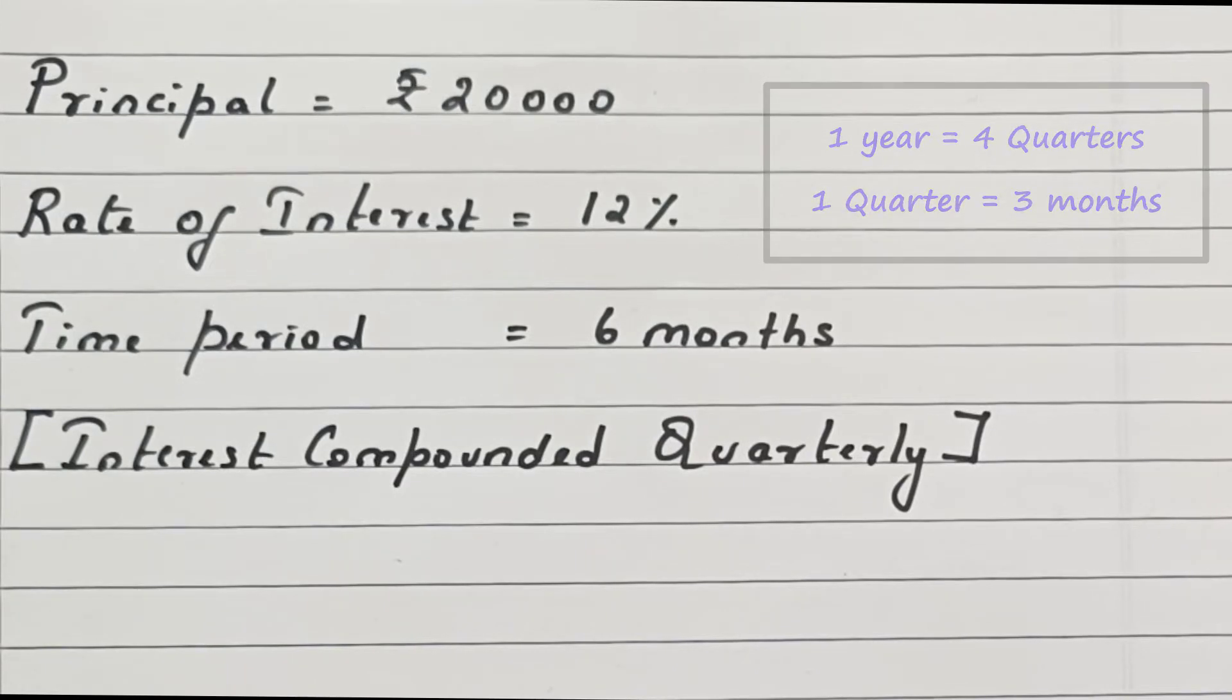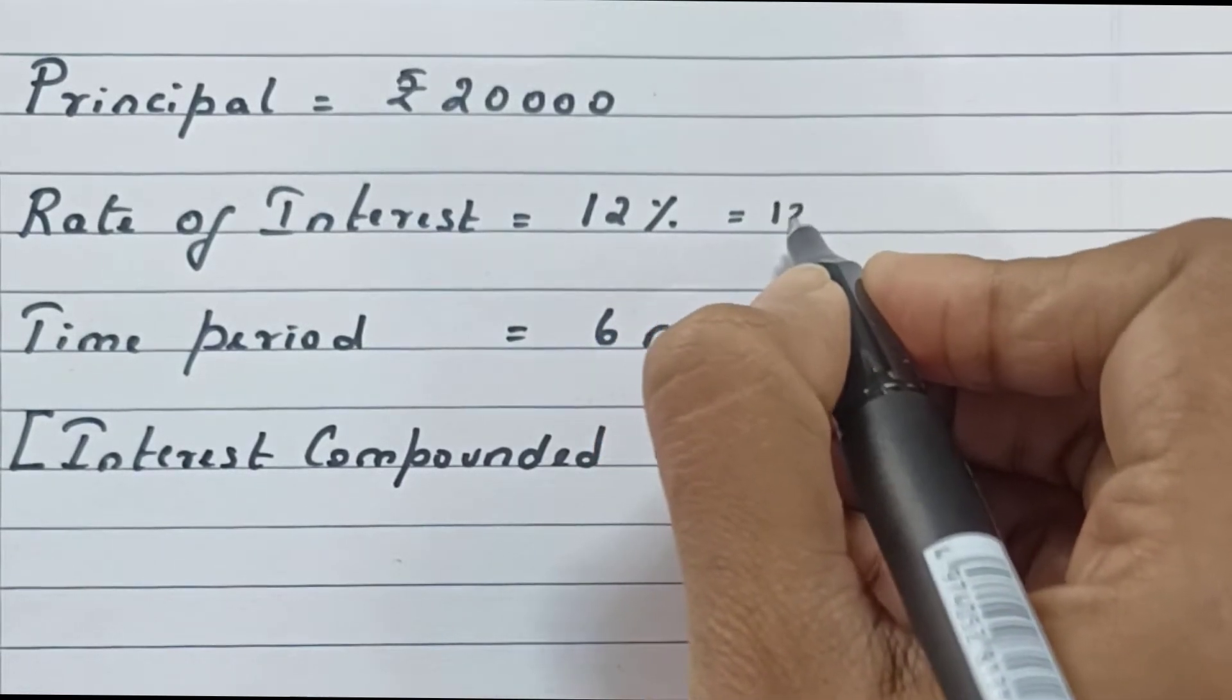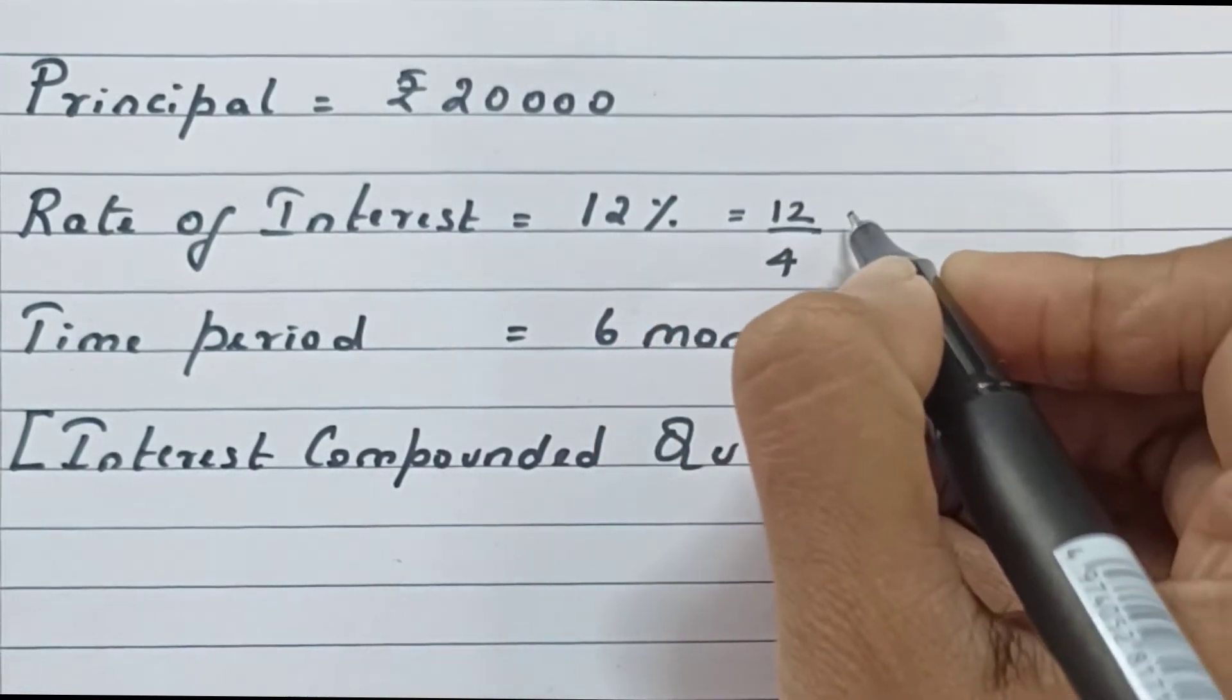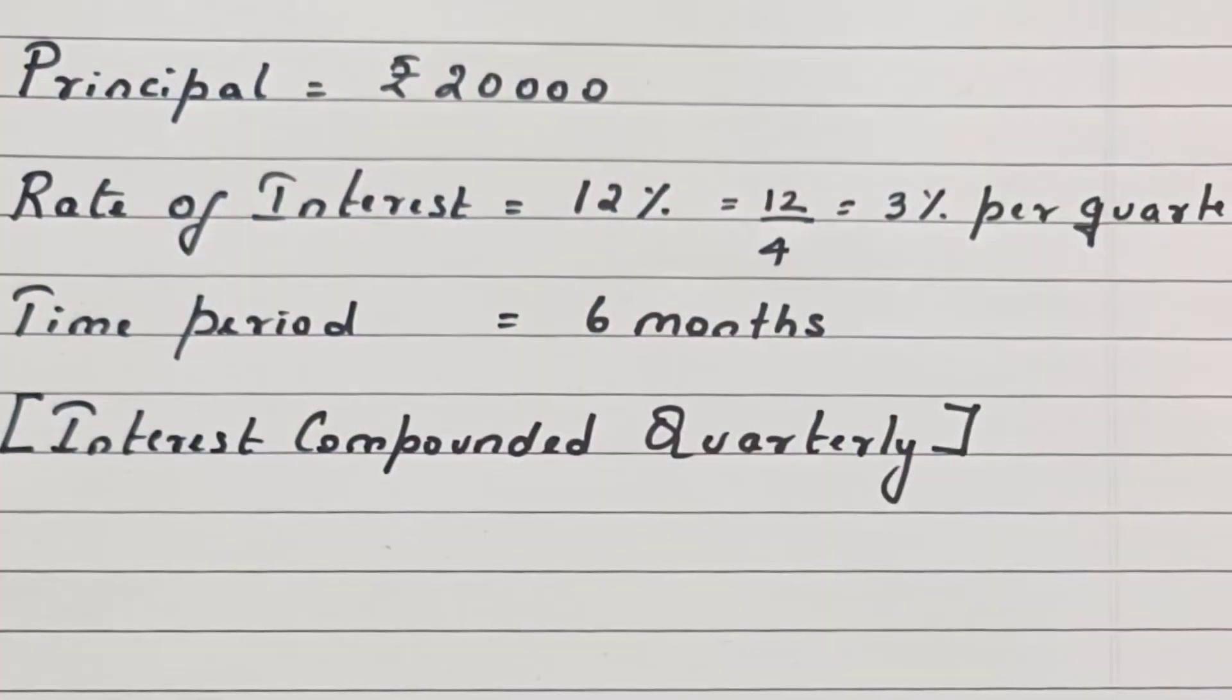So let's first divide rate of interest by 4, so we get 3% per quarter.